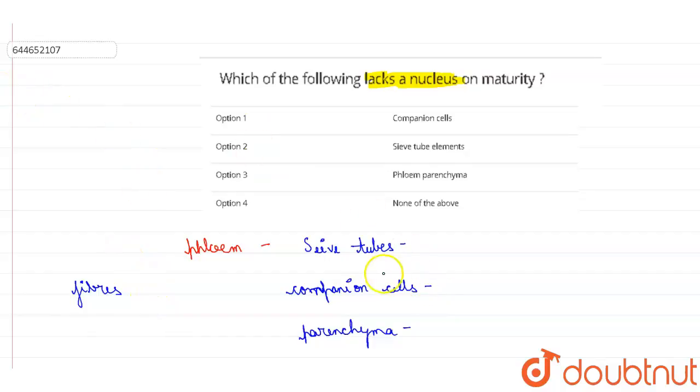The first one are the sieve tubes. They are elongated tubular structures or cells which are placed end to end and they have minute pores in them which is known as sieve plates. They help the plant to conduct the food from the leaves to all the other parts of the plant. And at maturity they lack nucleus and possess only some organelles. This is all about sieve tubes.